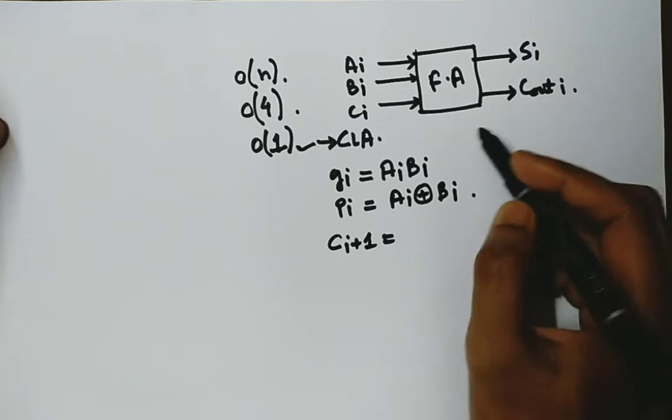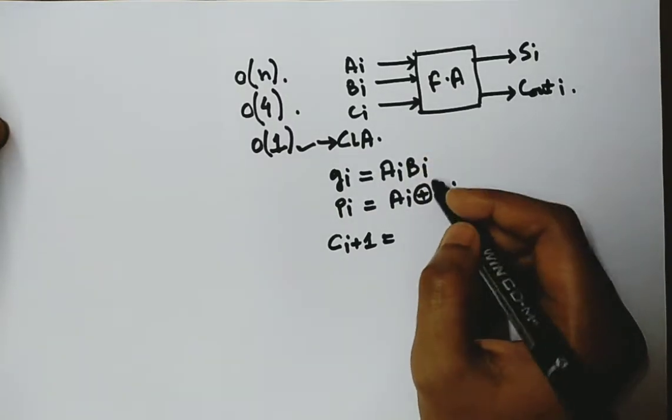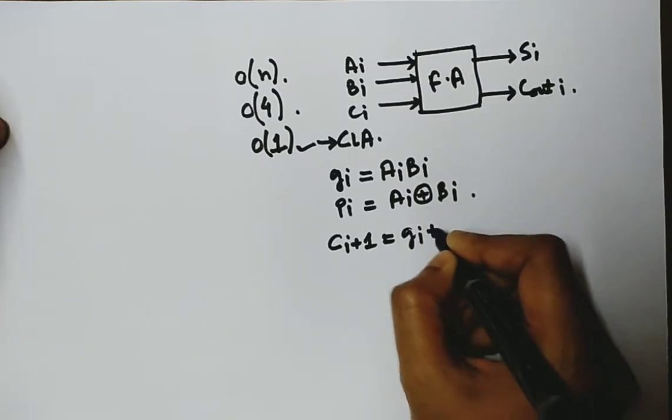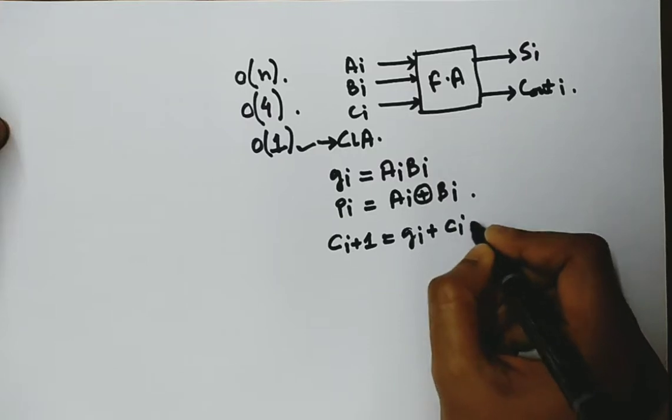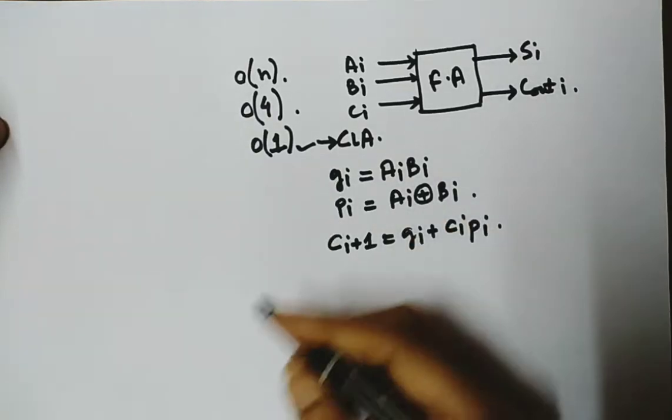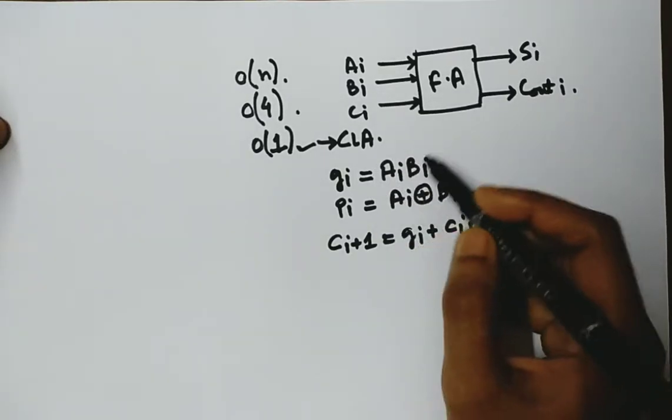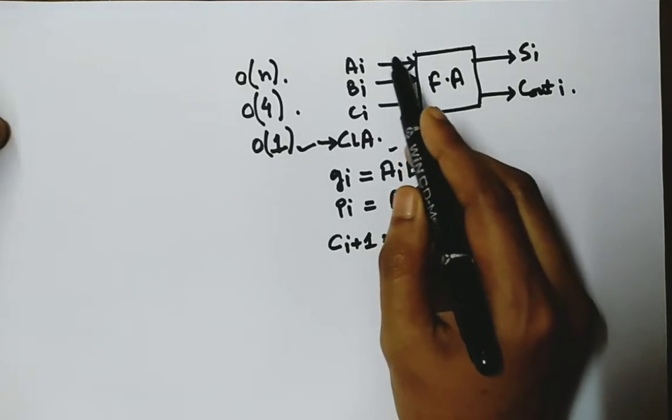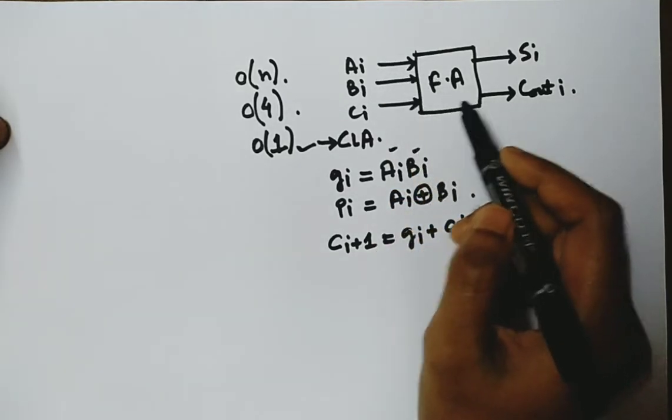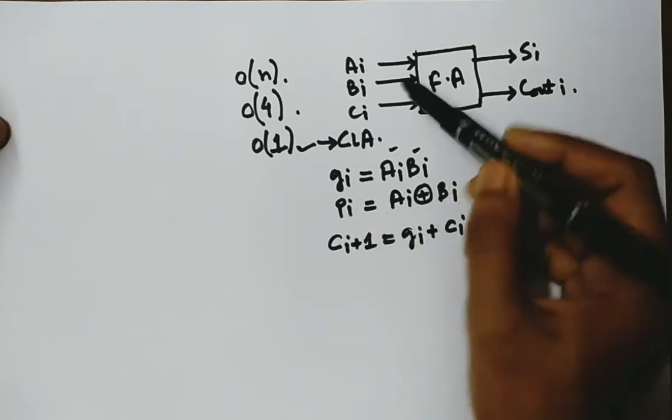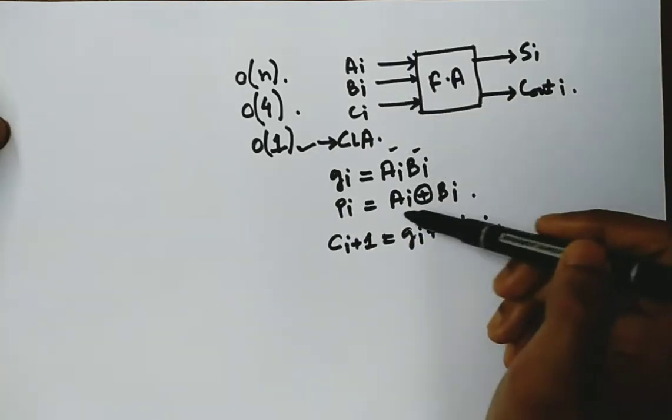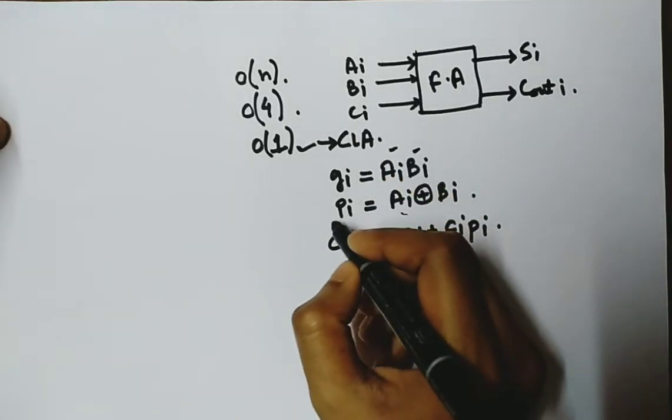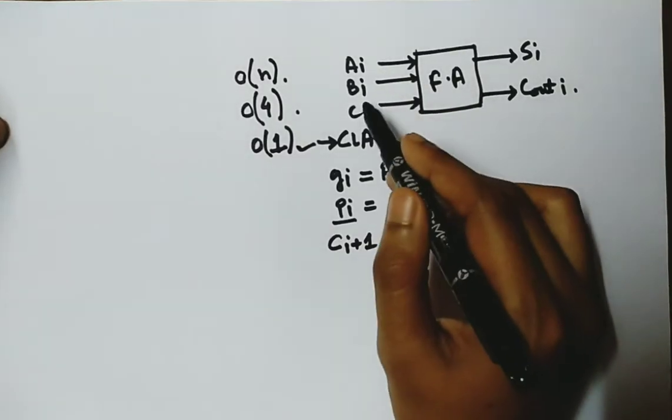Now, input carry to the i plus one stage, that is the next stage, will be - what is the generation function? If both Ai and Bi are one, then carry will be generated in the ith stage. And if either Ai or Bi is one, then if there is an input carry, then that carry will be propagated to the next stage.